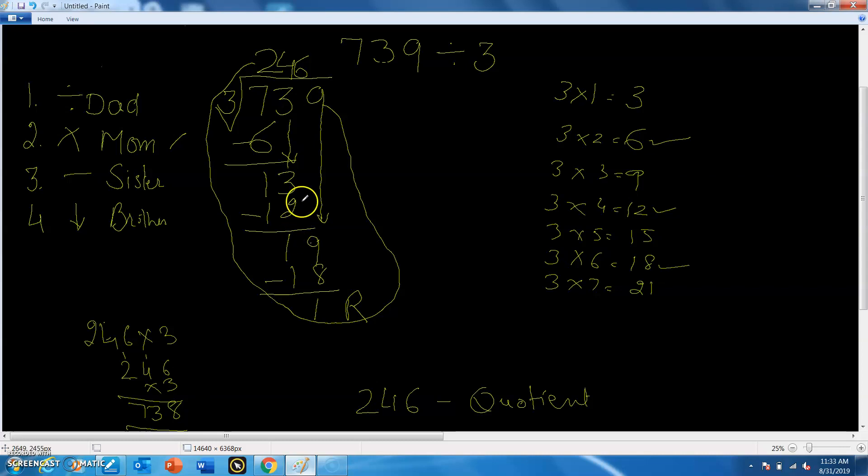Add this one number to 738, it will become 739. This is the dividend. So you can see, 246 multiplied by 3, by adding 1, it becomes 739. That means the answer is correct. Do more questions and have fun with math. Thank you.